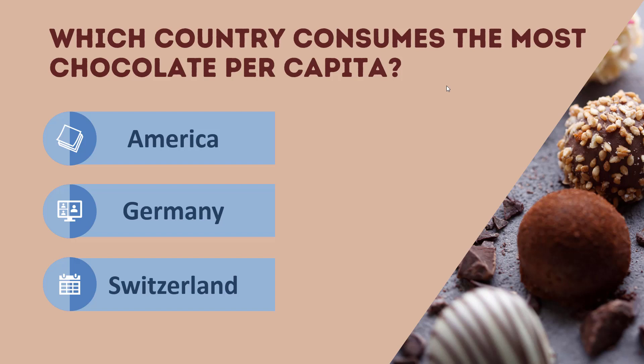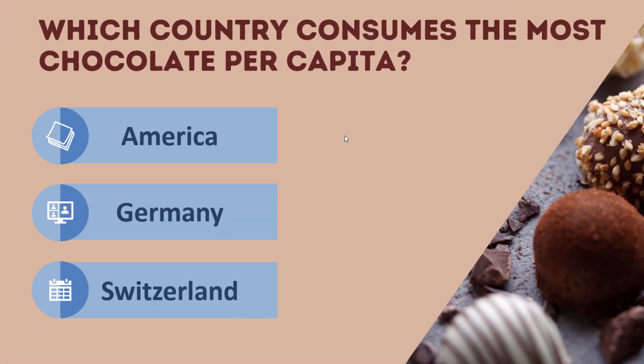In this case, I'm going to ask them which country consumes the most chocolate per capita. I have three options: America, Germany, and Switzerland. You'll notice my cursor, as I hover over these boxes, it turns interactive — there's the hand with the finger that I can click, as opposed to just the regular arrow.